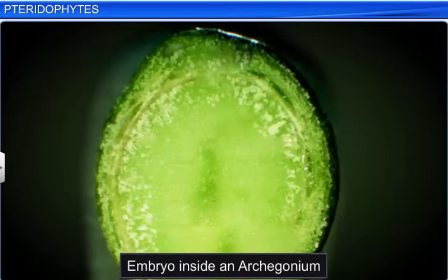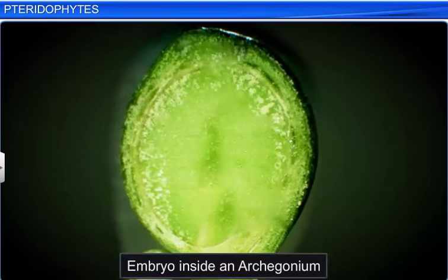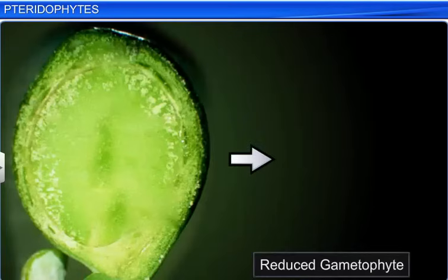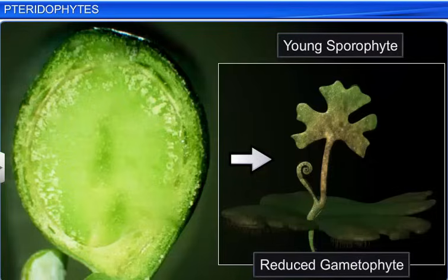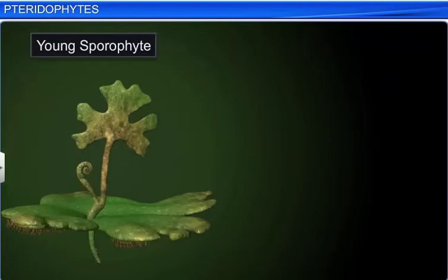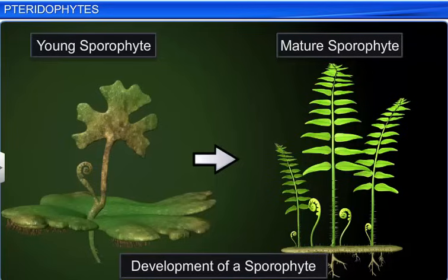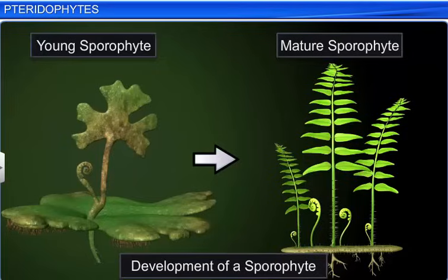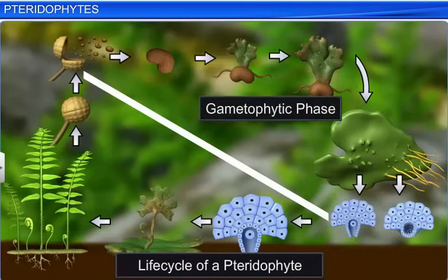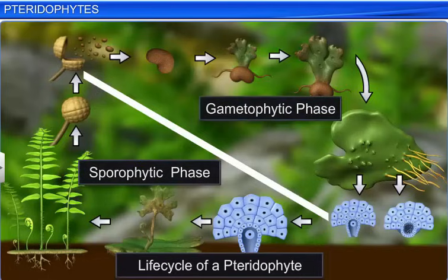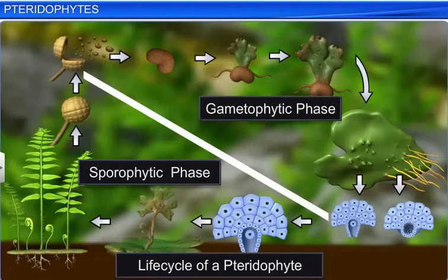This zygote develops into a young embryo, which further develops into a multicellular and well-differentiated young sporophyte, and ultimately into a mature sporophyte. This completes the life cycle of a pteridophyte, which is divided into the gametophytic phase and the sporophytic phase — the most dominant phase.